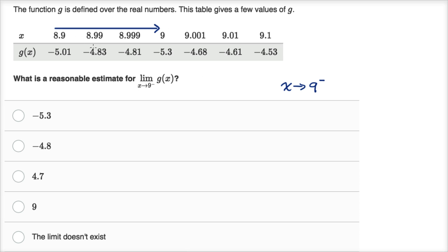Looking at these three values for these three x's, it looks like we're getting close to about negative 4.8. So it's approximately negative 4.8. Now we don't know that for sure — the limit might be negative 4.800243... or something. It doesn't always have to go to a nice-looking number.